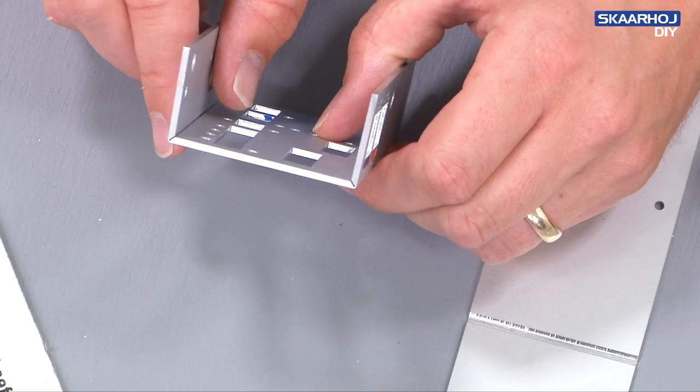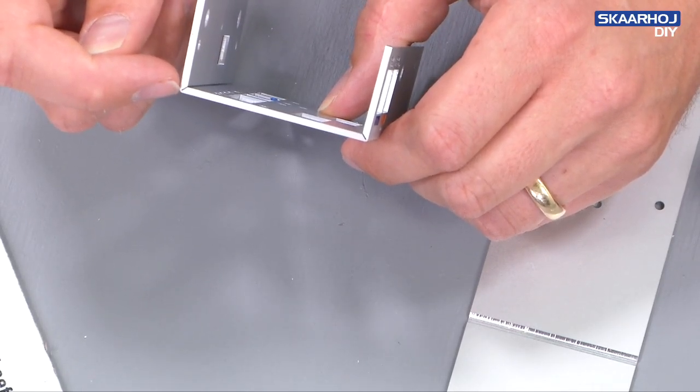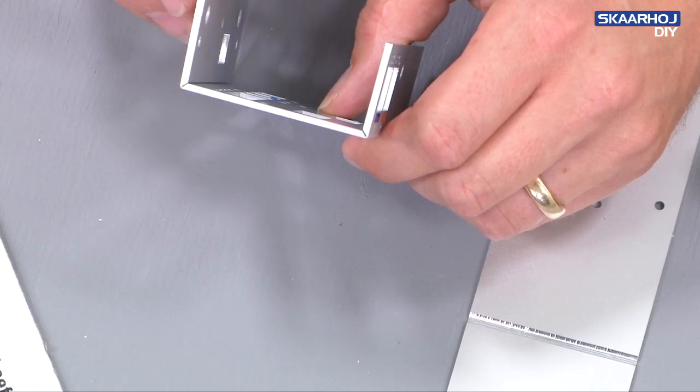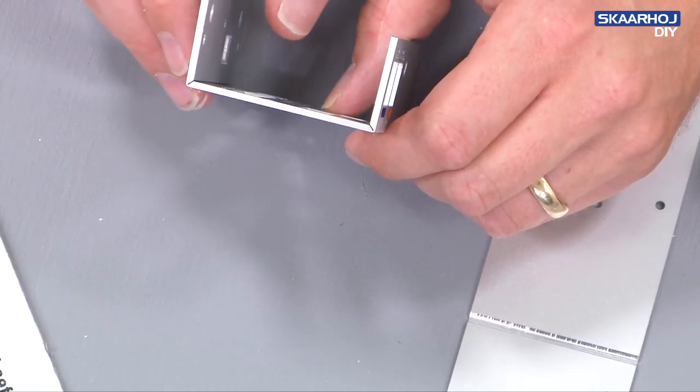And generally what happens when you do this, because there's like half a millimeter material left in the bend right here, you could do this forth and back like three or four times and then it will break.